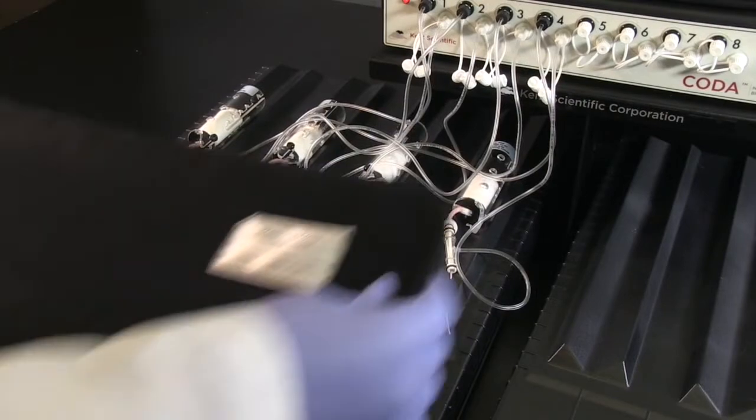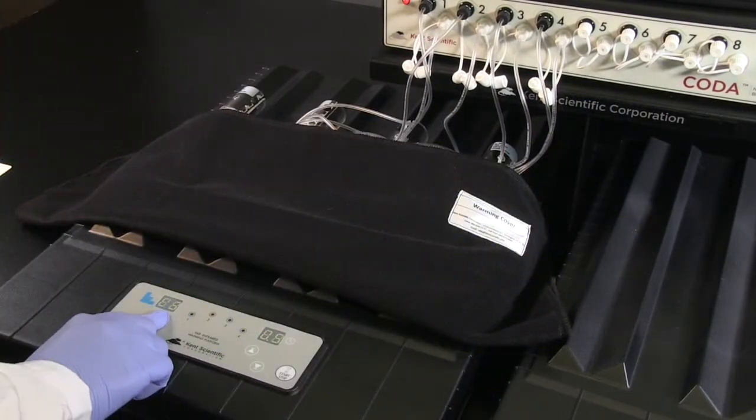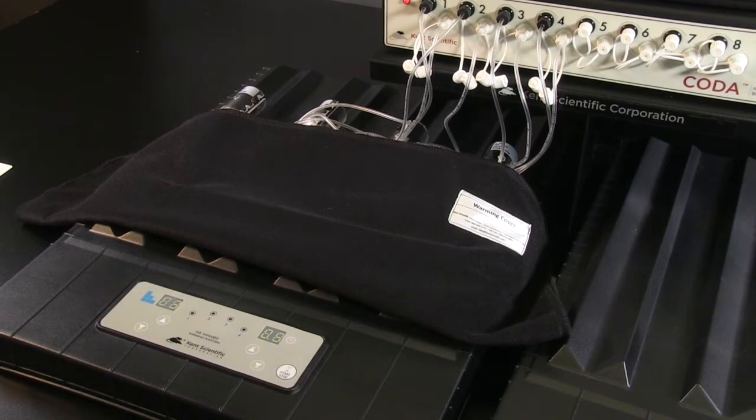Once both cuffs are placed, cover the animal's tails with the warming blanket and turn on the CODA warming platform to level 3. Warming is a critical step, as tail temperature is directly correlated to tail blood flow.